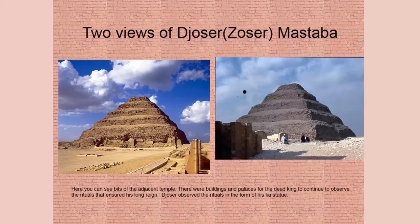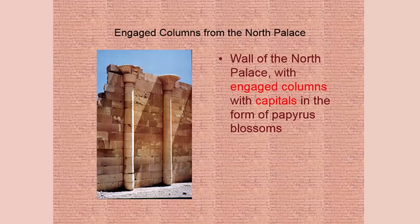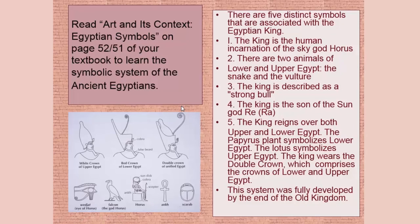Here's a close-up view of these sham buildings — this is the wall of the North Palace. They are covered with engaged columns, and the capitals of the columns are in the form of papyrus blossoms. This becomes an Egyptian column form.